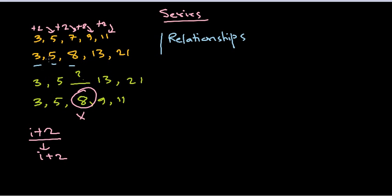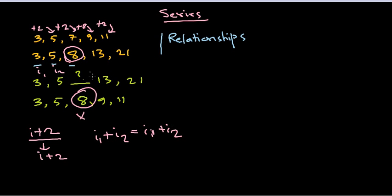In the second example — 3, 5, 8, 13, 21 — we can see that 3 + 5 = 8, 5 + 8 = 13, 8 + 13 = 21. If we call consecutive terms i1 and i2, then i1 + i2 gives the next term. The next term then becomes i1, and the previous i becomes i2.